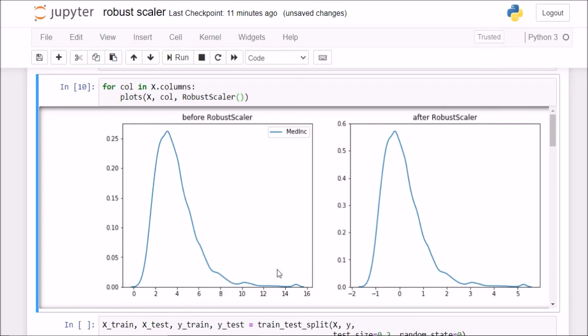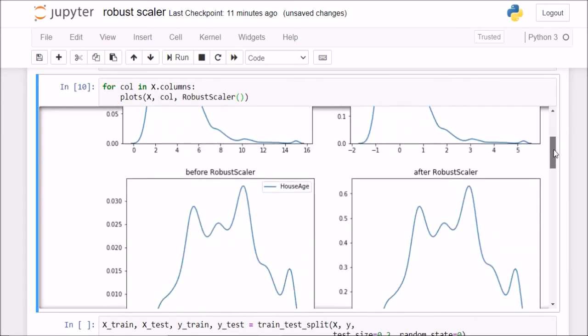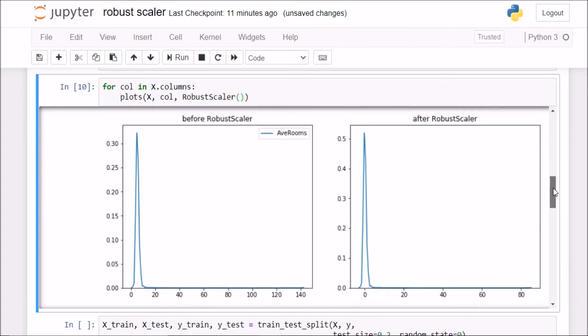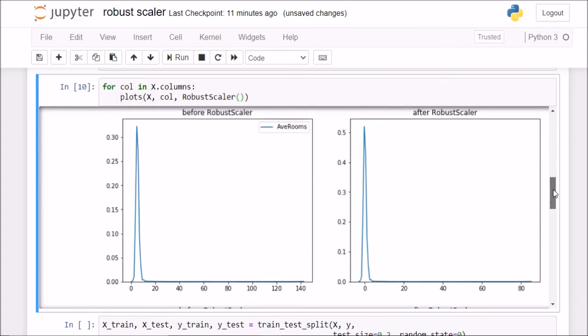And you see, since there were outliers in the original distribution, we have outliers in the output distribution as well. Similarly, for house age, we see the distribution is pretty similar. For average rooms also, it is pretty similar.